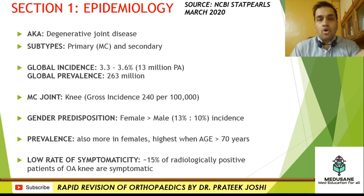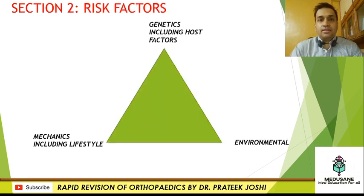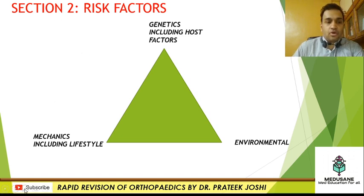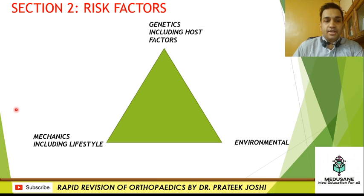Please write down or store these MCQ points. This is open source data taken from NCBI StatPearls with no commercial interest. When we read in PSM that any particular disease has risk factors, they give us an epidemiological triad — the holy trinity of host, agent, and environment. In osteoarthritis, the agent is your biomechanics including lifestyle, the host is host factors including genetic factors, and the environment completes the triad.